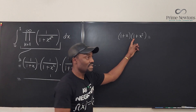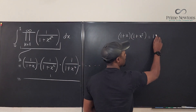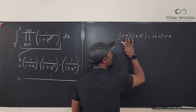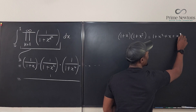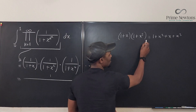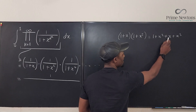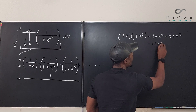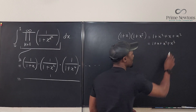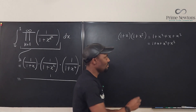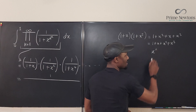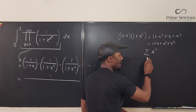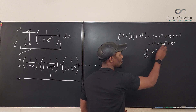Expanding: 1 times 1 = 1, 1 times x squared = x squared, x times 1 = x, x times x squared = x cubed. So the answer is 1 + x + x squared + x cubed, which equals the sum of x to the n from n=0 to 3.